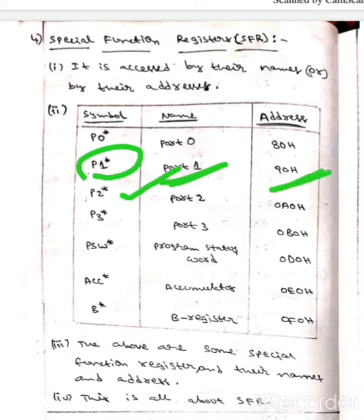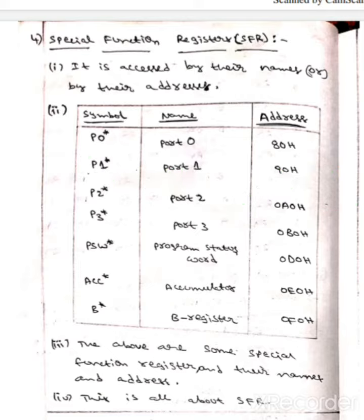The next one is P2 star. The name of P2 star is Port 2, whereas the address of P2 star is 0A0H. The next one is P3 star. The name of P3 star is Port 3.